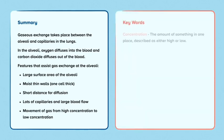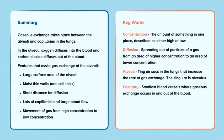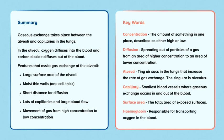Our key words. Concentration is the amount of something in one place described as either high or low. Diffusion is the spreading out of particles of a gas from an area of a higher concentration to an area of a lower concentration. The alveoli are tiny air sacs in the lungs that increase the rate of gaseous exchange. The singular is alveolus. The capillary is the smallest blood vessel where gaseous exchange occurs in and out of the blood. Surface area is a total area of exposed surfaces and haemoglobin is responsible for transporting oxygen in the blood around the body.